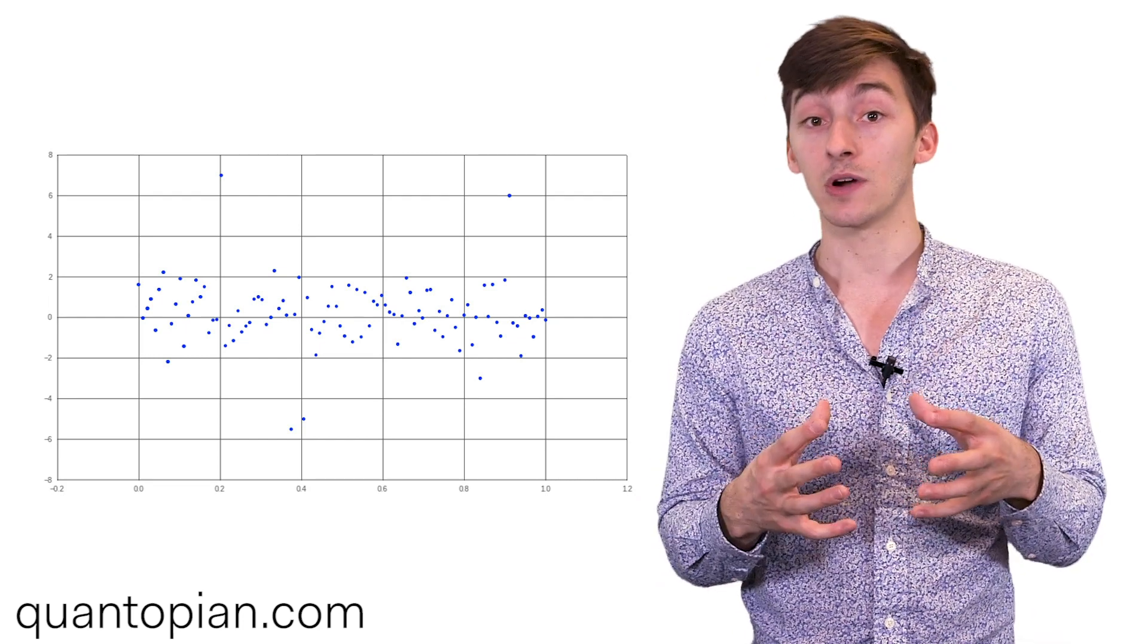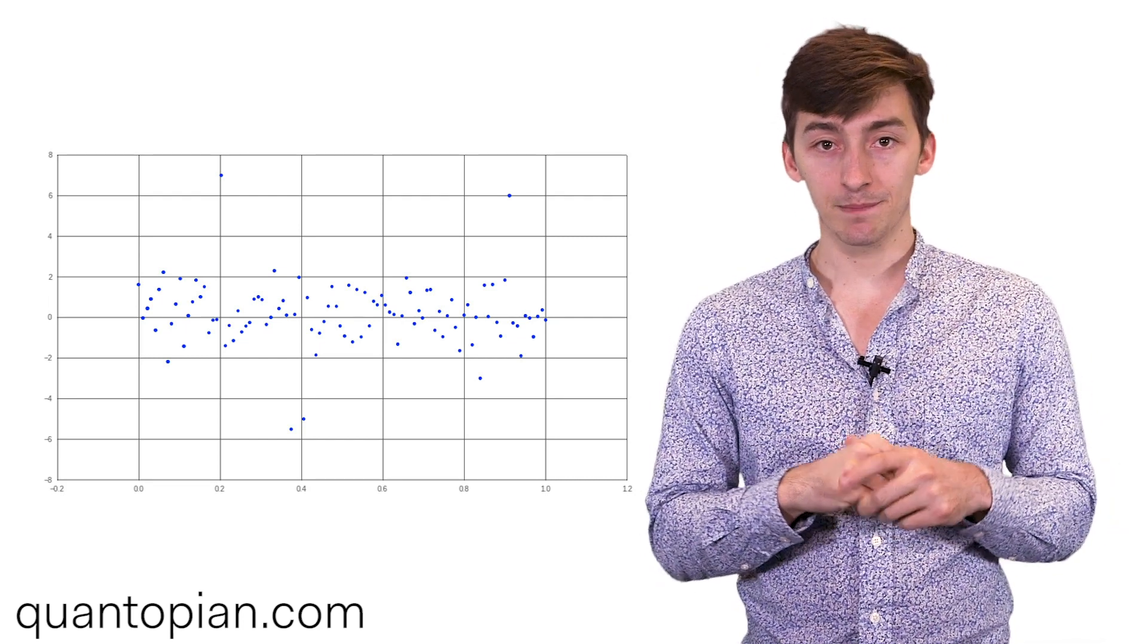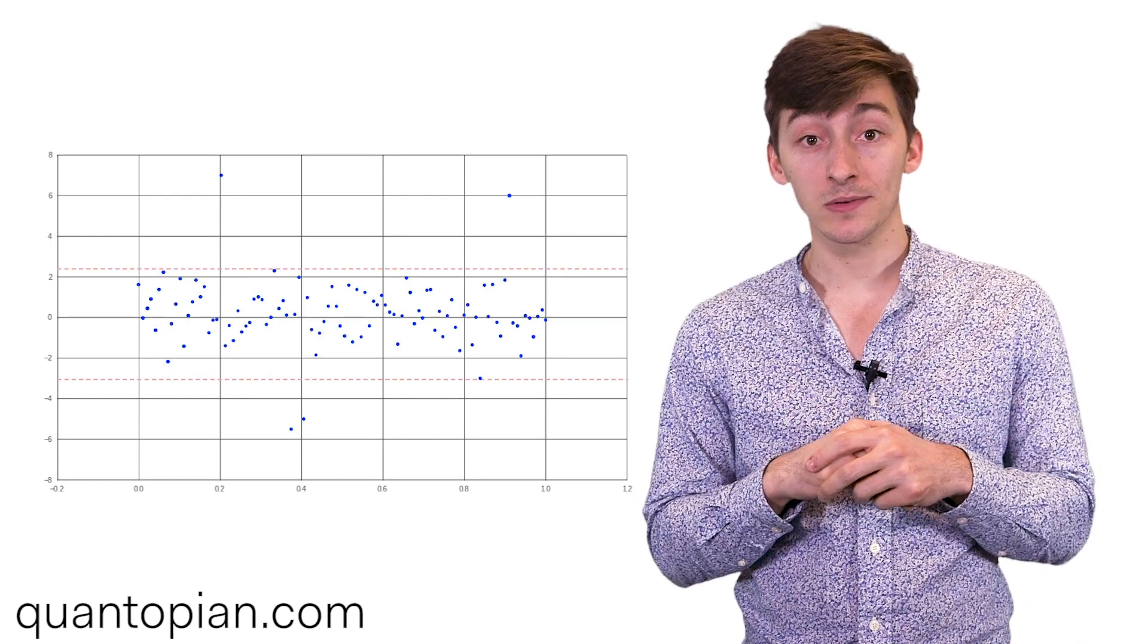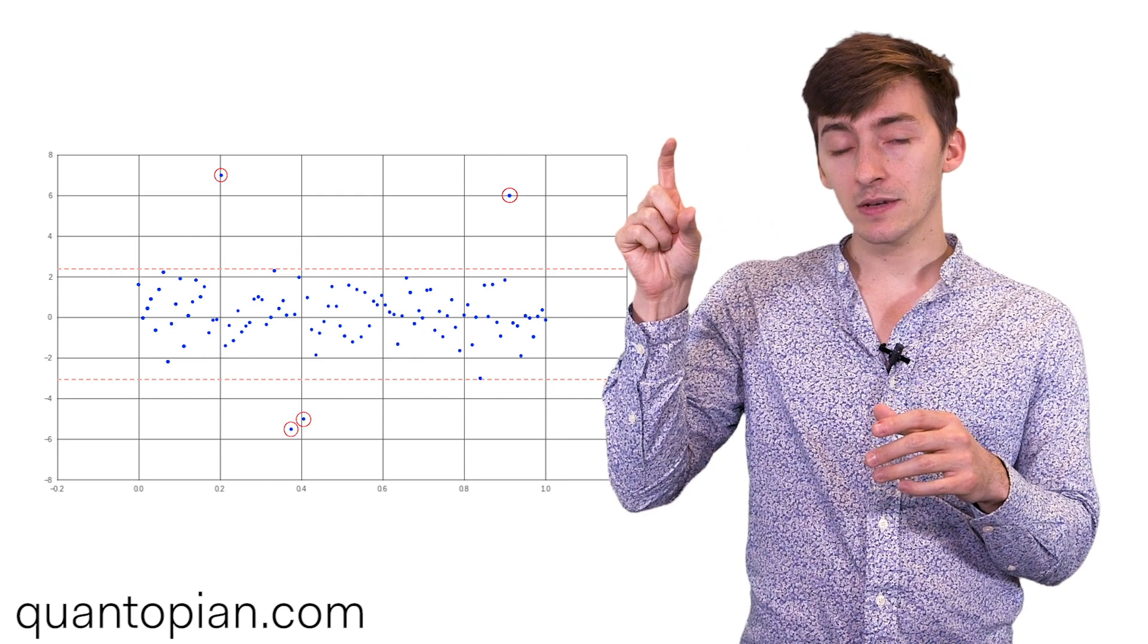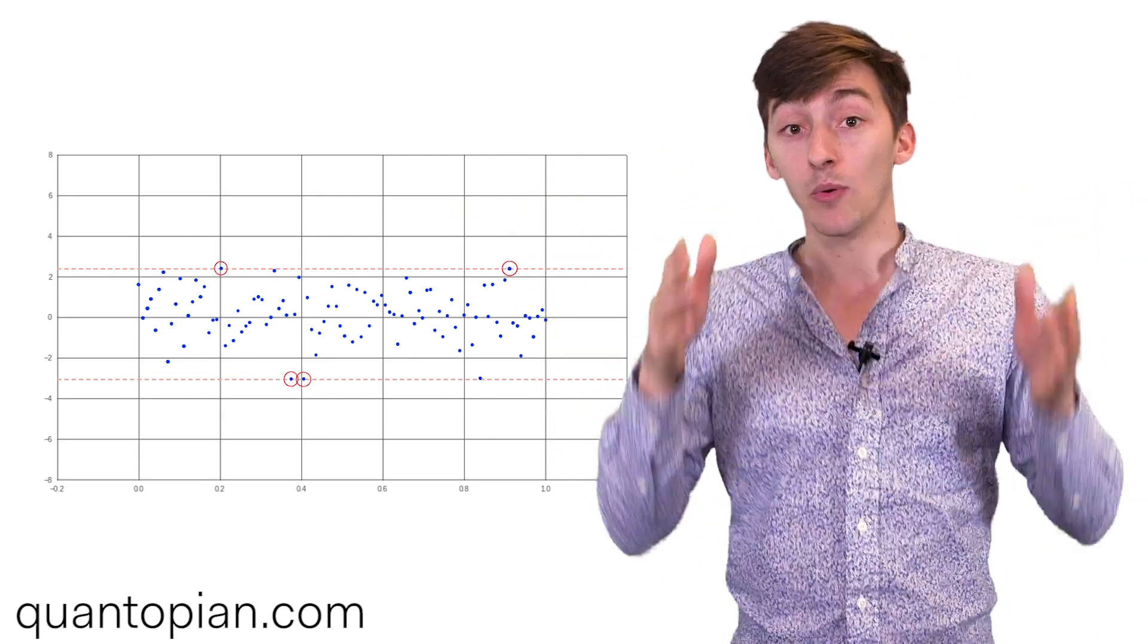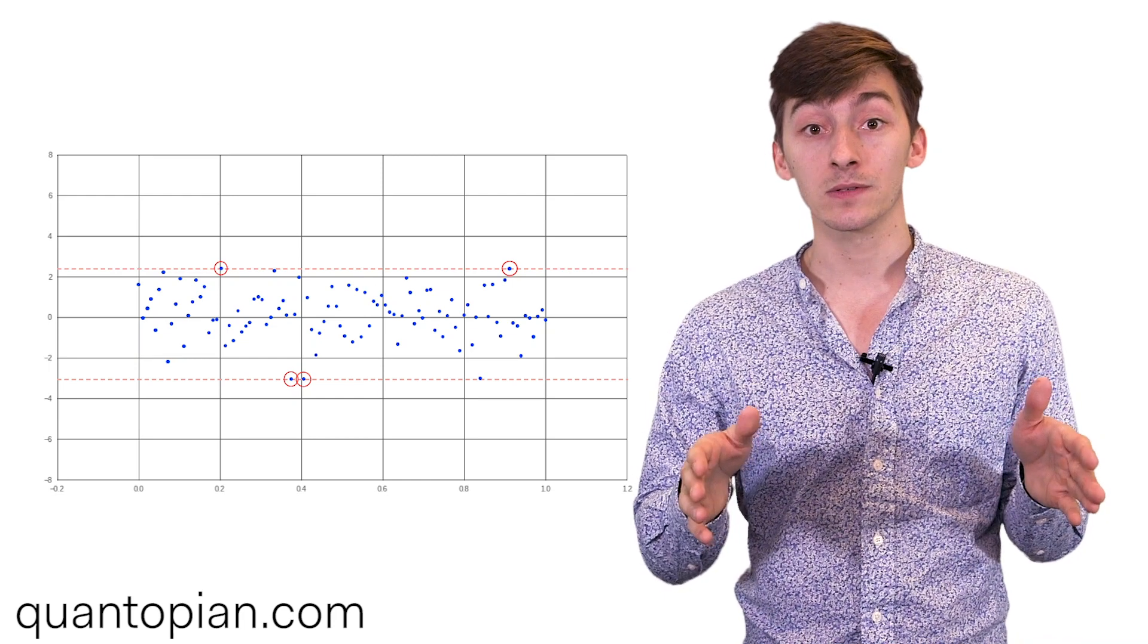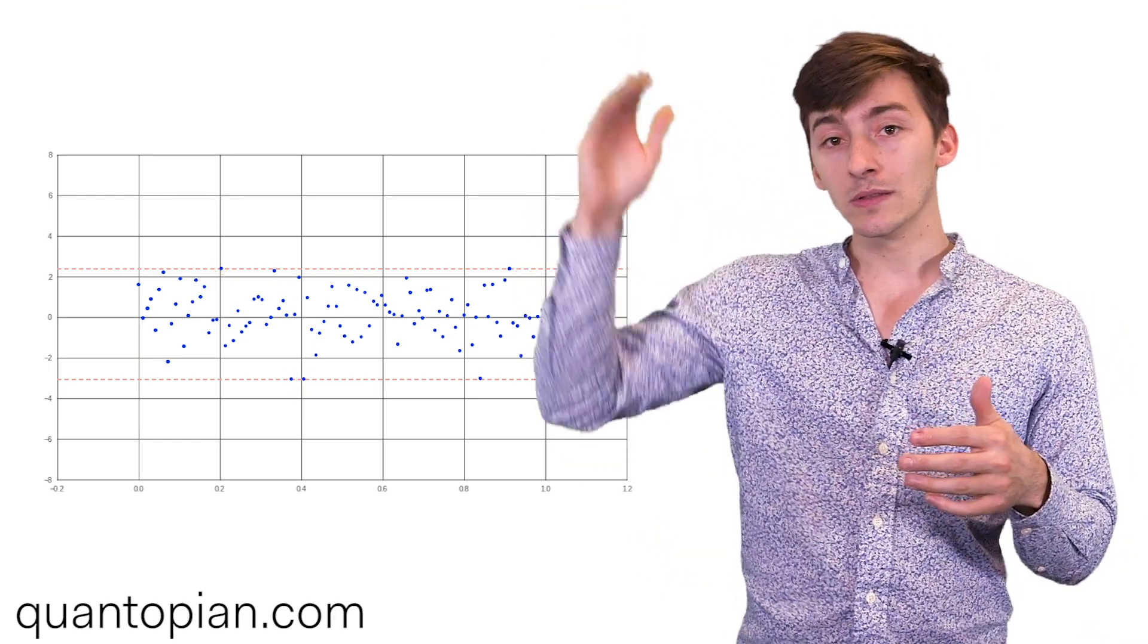So one thing that we can do instead of dropping outliers is to Windsorize them. Windsorization is when we set some percentile level, usually around 2.5% or 5%, and we take the top 5% and the bottom 5% of our data and we just truncate it to the borders of those percentiles. So basically if we have anything that is particularly high, we're going to lower it to the point where it's just at the threshold there.